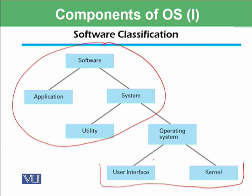So today we will be discussing user interface and the kernel. Whenever a user wants to communicate with the computer, the part which communicates with the user is known as the user interface. The kernel is the core part of the operating system which performs basic operations like file management, memory management, process management, etc.